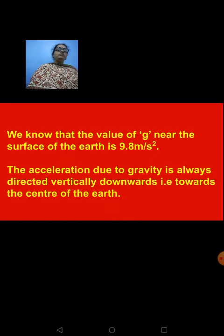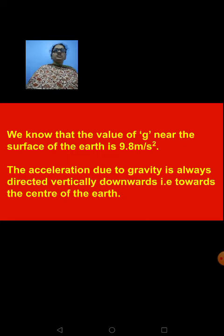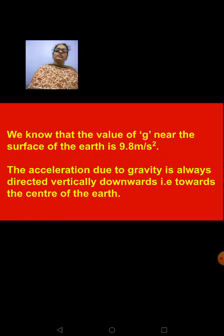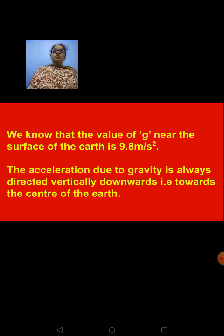We know that the value of g near the surface of the earth is 9.8 meter per second square. What is the formula for small g? Small g is equal to capital G into M upon R square, where capital G stands for universal gravitational constant, capital M stands for mass of the earth, and R stands for radius of the earth. When you substitute all these standard values, you get the value of small g near the surface of the earth as 9.8 meter per second square. I have shown this in my previous videos — please watch that again.